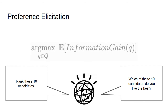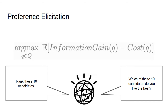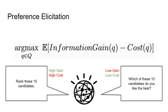From there, we can go a step further and ask questions that maximizes information gain subtracted by the cost of answering such questions. For example, asking you to rank 10 restaurants can tell us a lot about your preferences, but it might take quite some effort to rank them all. Instead, it might be better to just ask for your favorite one from the 10.